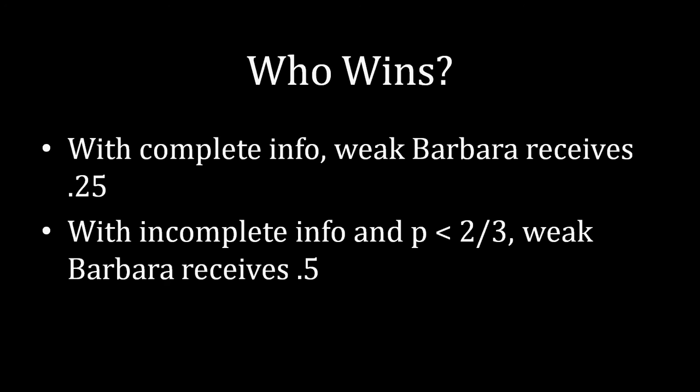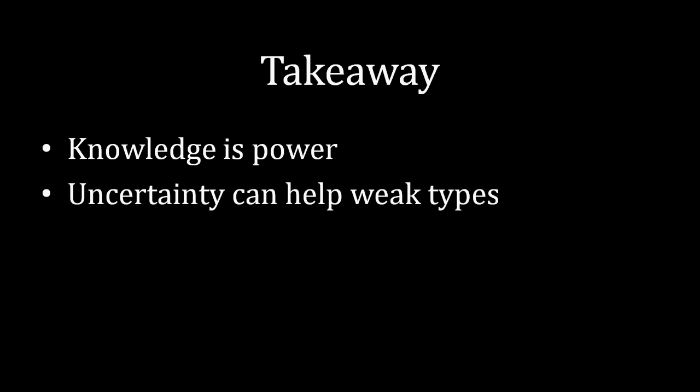The takeaway from this lecture is: first, knowledge is power — you're going to do better in the situation where you know the other side's outside option than when you don't, and we can quantify that very specifically. Second, uncertainty can help weak types: it allows them to pretend to be strong types and get the amount that a strong type would receive through a bargained resolution. That wraps up this lecture — hope you enjoyed it, and I hope to see you next time when we continue analyzing these games of uncertainty.